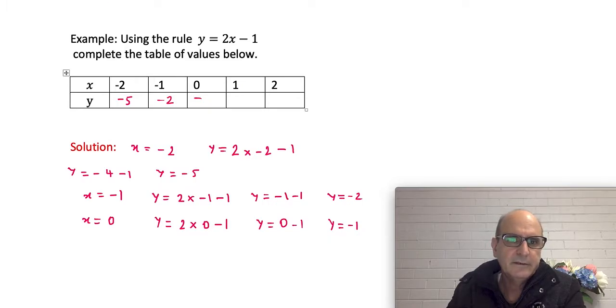Next one is x equal to 1, and the same procedure again. Y equal to 2 times 1 minus 1, and y is equal to 2 times 1 is 2, then minus 1, and 2 minus 1 is just 1.